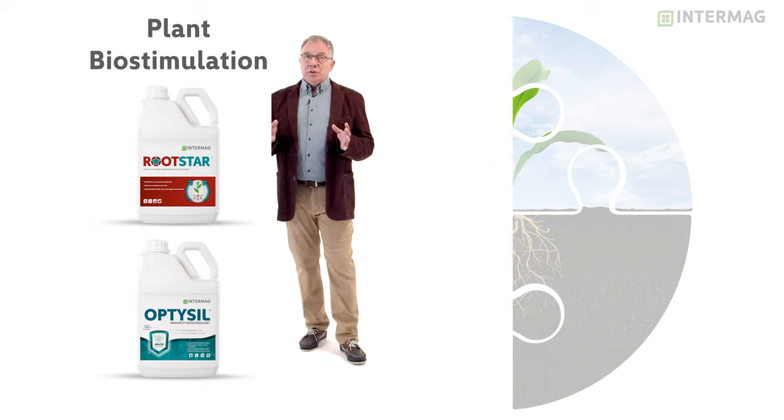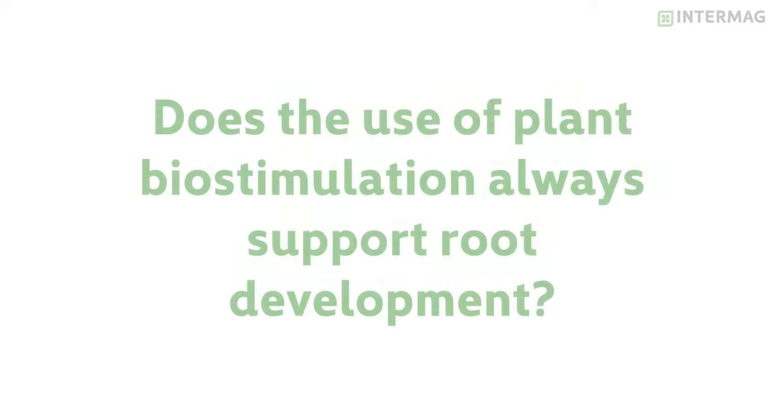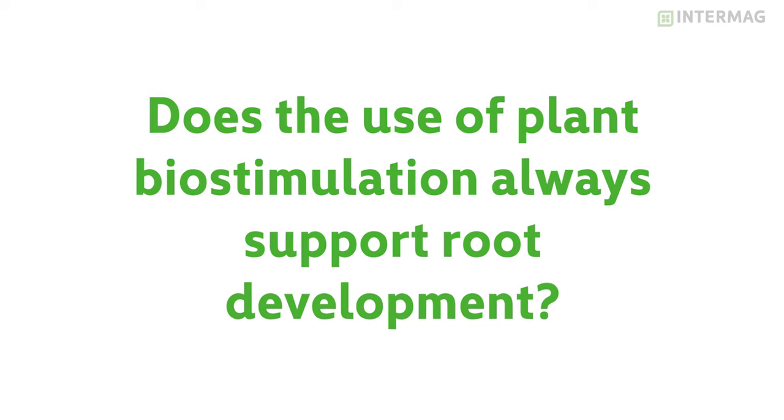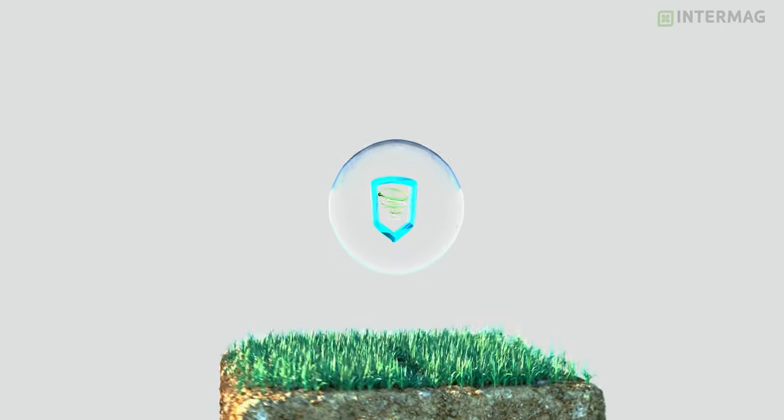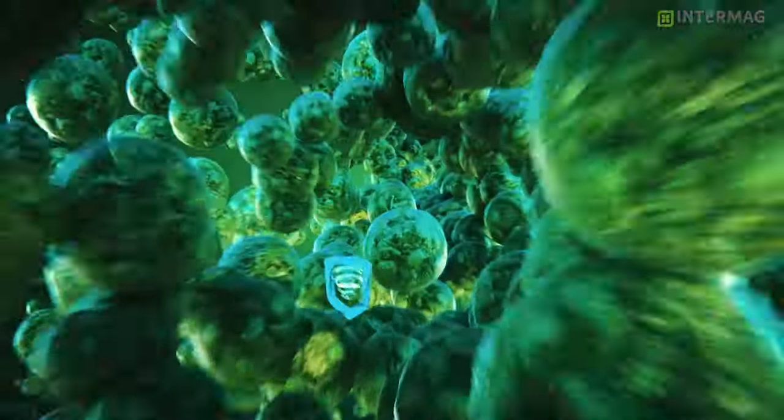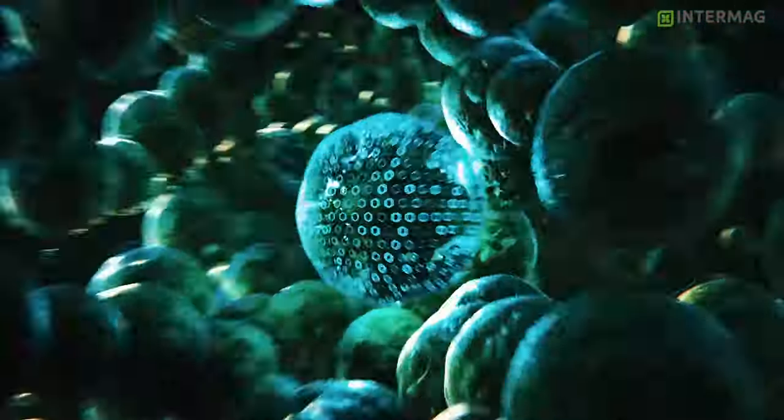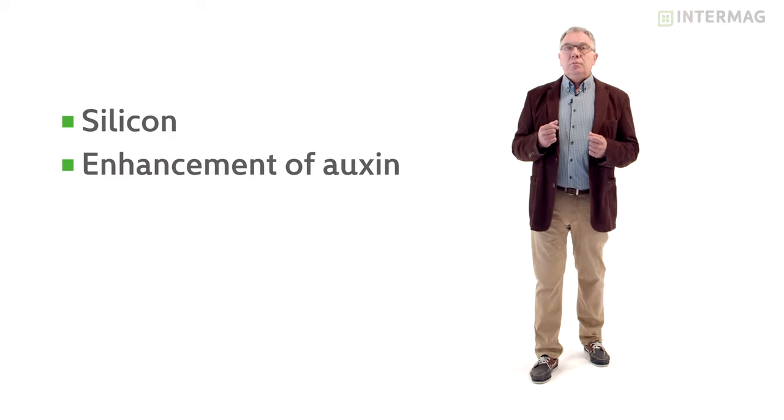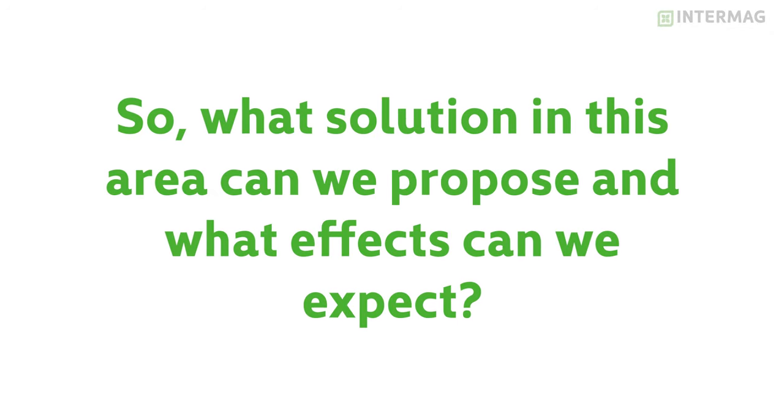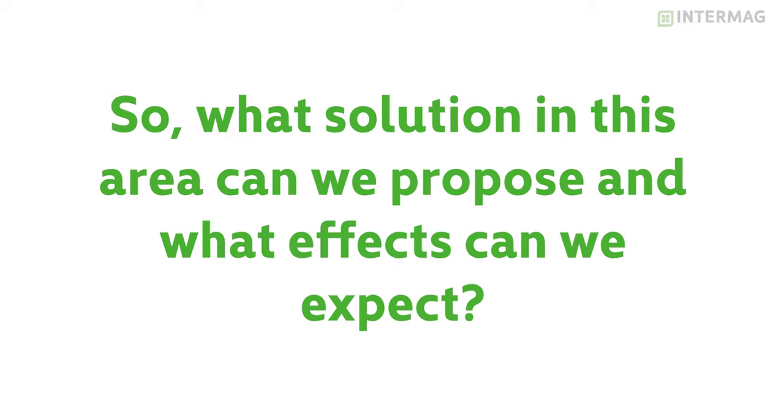But the main question is does the use of plant biostimulation always support root development? The answer is no. We have to have special biostimulants which could really improve growth and development of roots. What does it mean special? Special means the biostimulants which contain silicon or contain nutrients which promote synthesis of auxin in plants which promote root growth. So what could be proposed? What solution in this area can we propose and what are the effects of these applications?